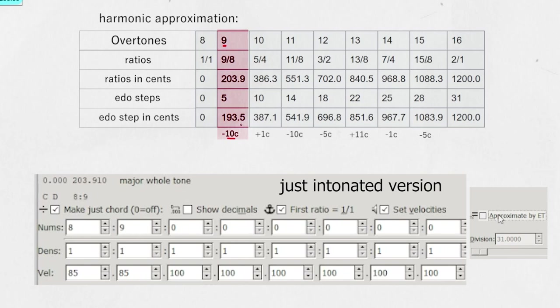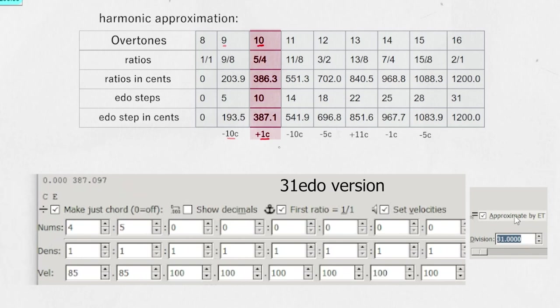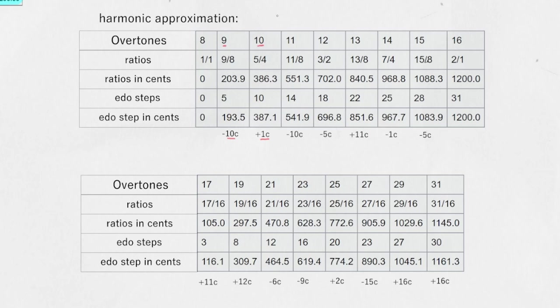If we look at the fifth harmonic or the 10th overtone approximation here, we see that it's only off by about a cent. This is a really appealing feature of 31 equal. You basically get just intonated five fours. The 11th harmonic approximation is off by about 10 cents.